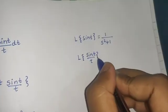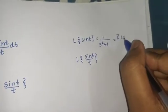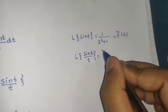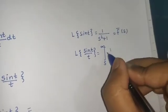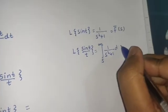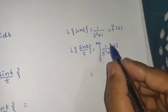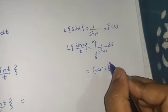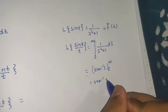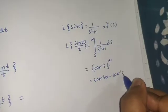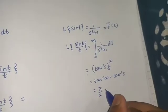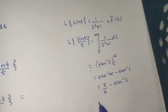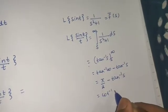The division-by-t formula says that if the Laplace of f(t) is F(s), then Laplace of sin(t)/t gives you the integral from s to infinity of 1/(s² + 1) ds. Integrating, you get tan⁻¹(s) evaluated from s to infinity, which is tan⁻¹(∞) minus tan⁻¹(s), giving π/2 minus tan⁻¹(s). Since tan⁻¹(s) + cot⁻¹(s) = π/2, this simplifies to cot⁻¹(s).